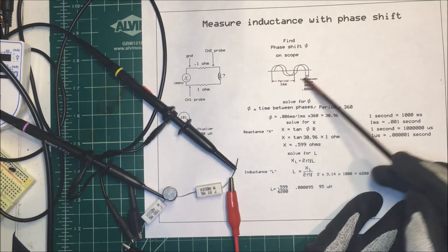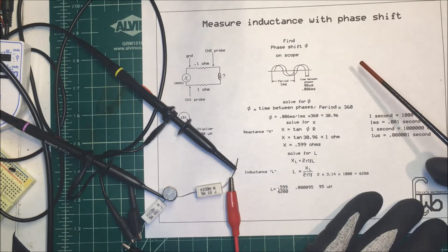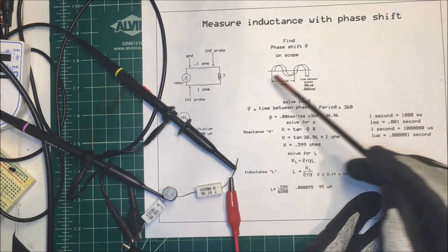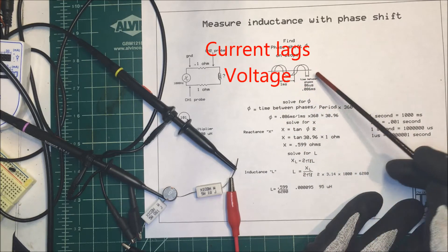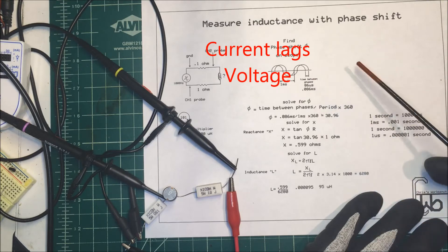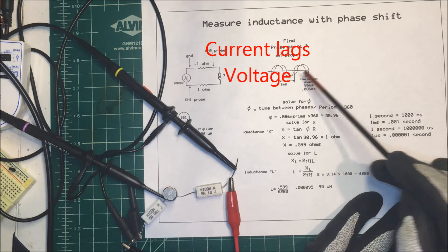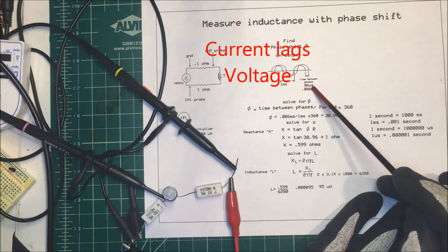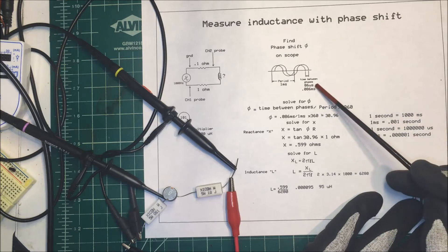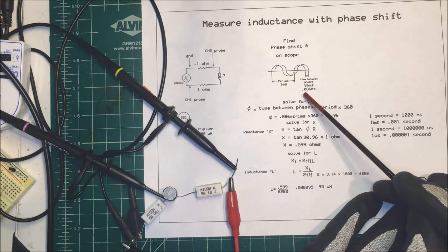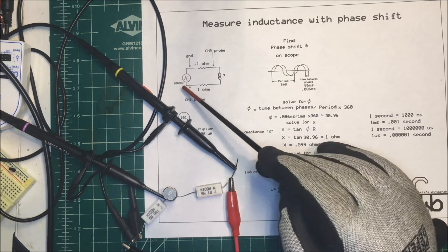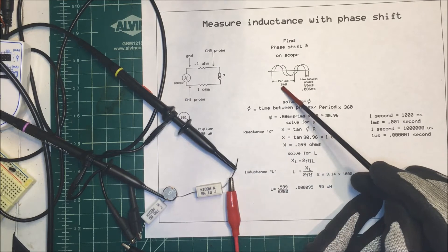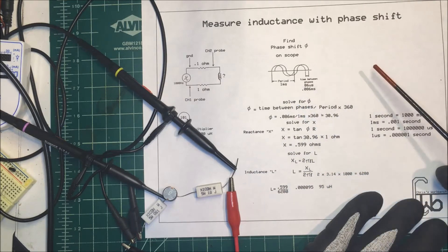When we apply voltage to this circuit we're going to get a sine wave on the scope. The current will lead the voltage by a certain amount of time. On the scope there it's 86 microseconds, which converts to 0.086 milliseconds. The period is just your Hertz divided into one, so that's one millisecond.